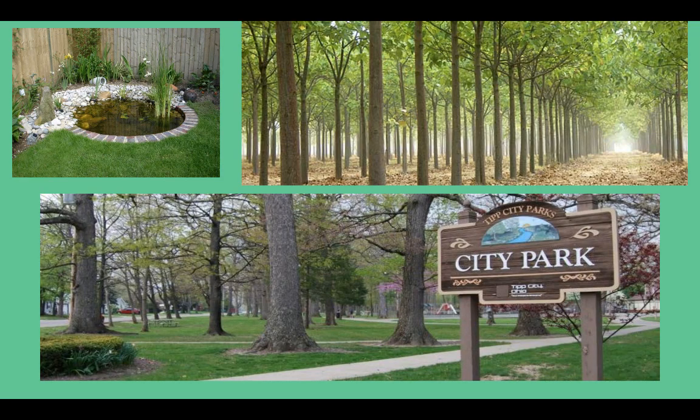If you look at any of these pictures, you would agree that there is a different number of species. In the top left we have someone's backyard, on the right a lumber plantation, and then a city park. It's visible that there are thousands of different organisms even on the microscopic level, and the total number of organisms is going to be dependent on the species present or even human impacts.